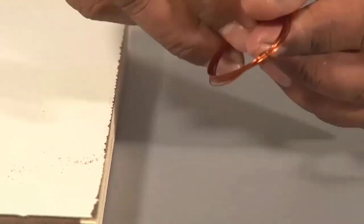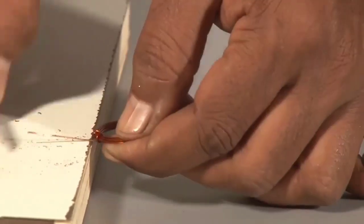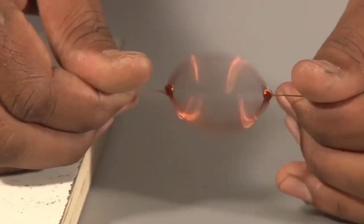On the other diametrically opposite side, scrape the insulation entirely. The coil is ready now.